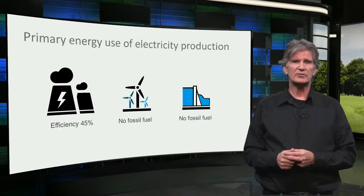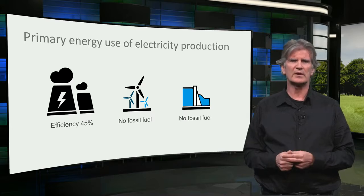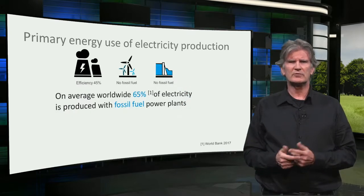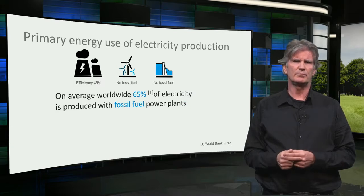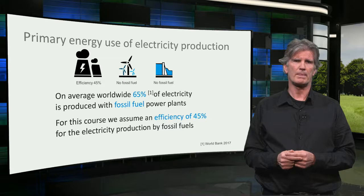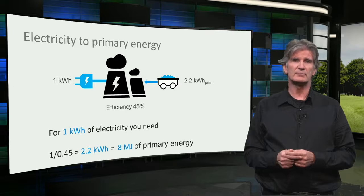Most of the electricity worldwide is produced in a power plant using fossil fuels like coal or gas. If the electricity comes from wind turbines or hydroelectric power, no fossil fuels are used. On average worldwide, 65% of the electricity is produced with fossil fuel power plants. For this course, we take an average efficiency of 45% for electricity production by fossil fuels. So for 1 kWh of electricity, you need 2.2 kWh or 8 megajoules of fossil fuels — so-called primary energy.